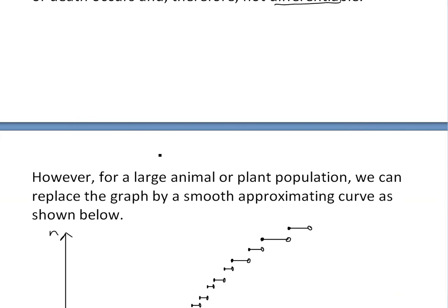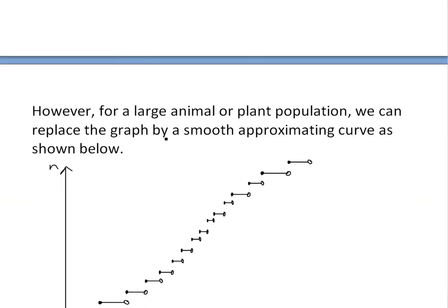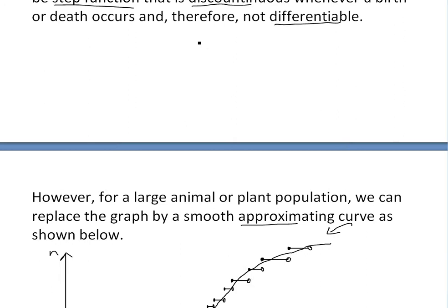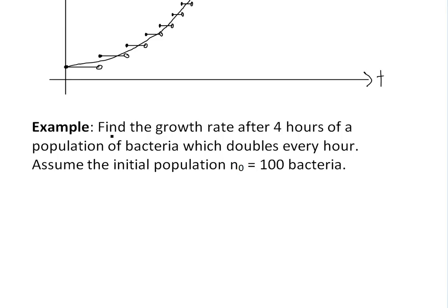However, for a large animal or plant population, we can actually replace the graph by a smooth approximating curve. If we look at this step function, this filled-in circle means this is the value. You're going to be stuck at this one until there's a birth, and then you're going to be stuck until there's a birth. But if it's a large population, we could approximate it by a curve. We could just draw a curve across it, and then with this curve, we could apply the derivative or the growth rate.